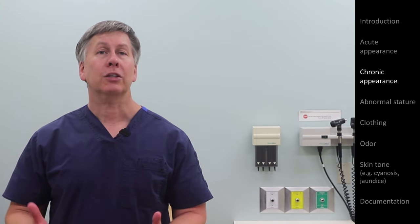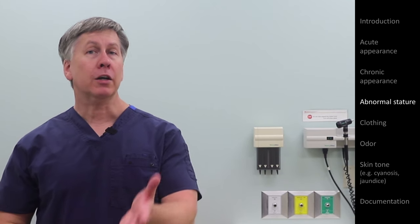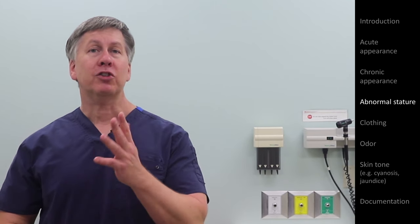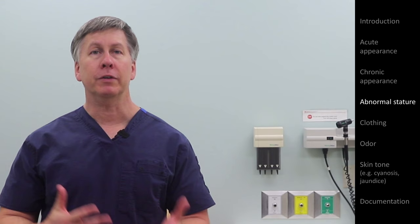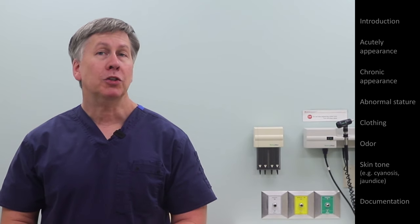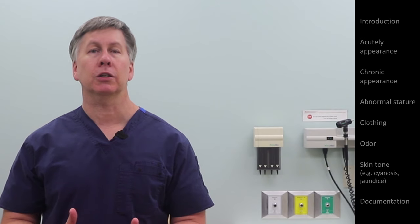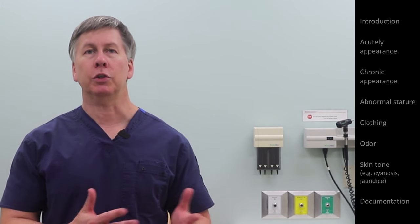Another characteristic that can be included under general appearance: if someone has an abnormality of their stature, I would include it here — for example, if they have dwarfism. Likewise, if you are interviewing or examining them in a mobility device such as a wheelchair, I would mention that here too, using direct but objective language, such as 'patient seated in an electric wheelchair.'